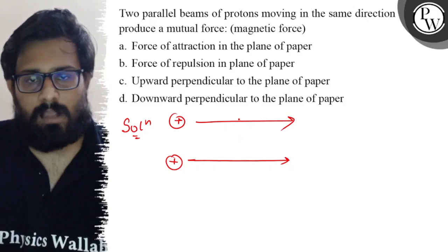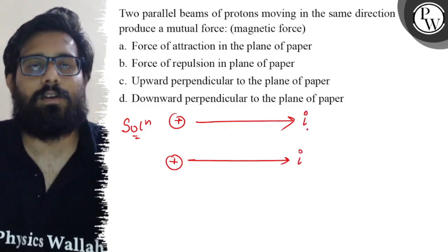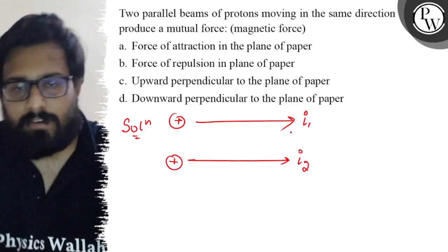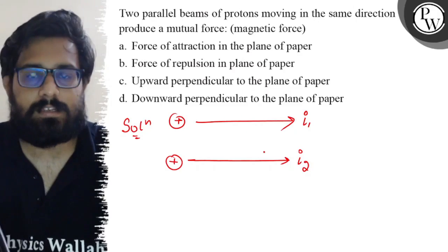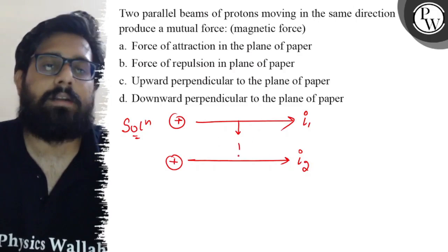So if both proton beams are going on, we can consider it like current is flowing in the same direction. When two wires flow in the same direction, they will attract one another.